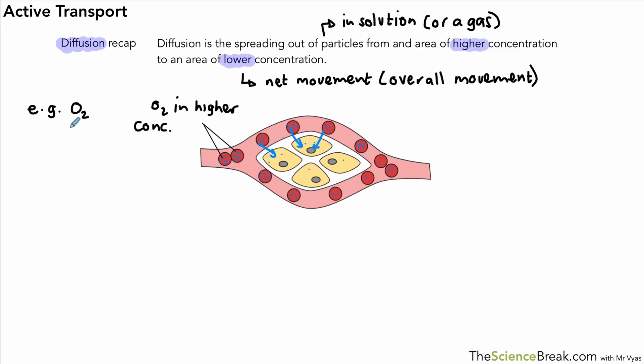We also gave a second example of carbon dioxide. Now carbon dioxide is produced by cells because those cells carry out a process called aerobic respiration, and that carbon dioxide would be therefore in higher concentrations in the cell so they would diffuse out into the blood. Okay, so that's a recap.